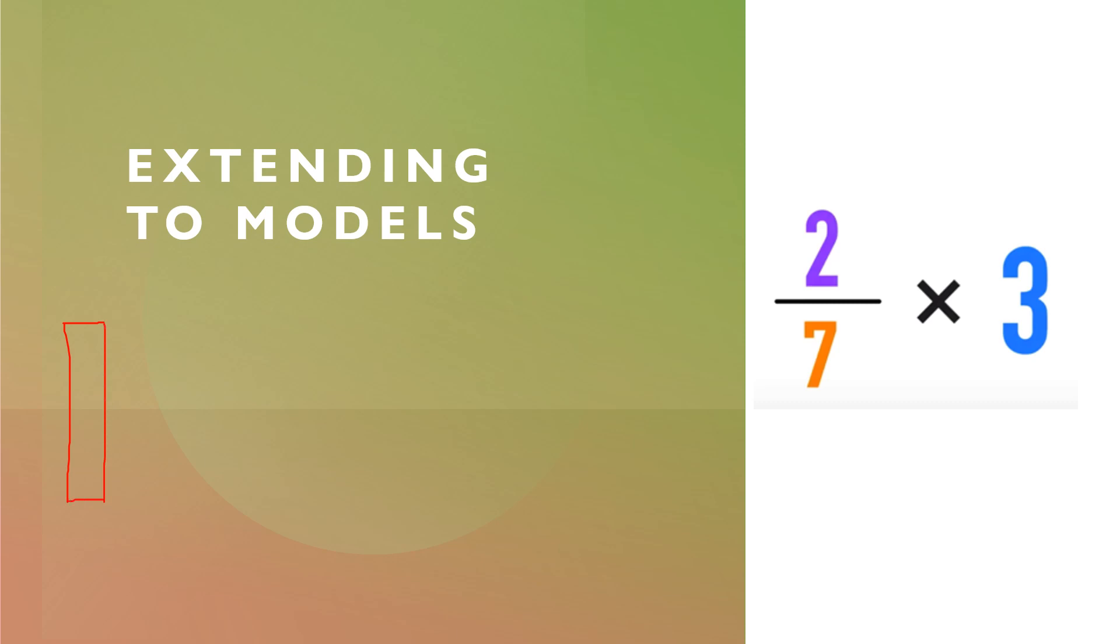Since my denominator is 7, I'm going to divide this Kit Kat bar into 7 pieces. And because the numerator is 2, I'm going to shade in 2 of the 7 pieces. This problem says I have 3 times 2 sevenths, so I have to repeat the same picture 2 more times.